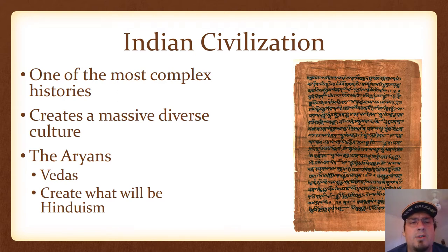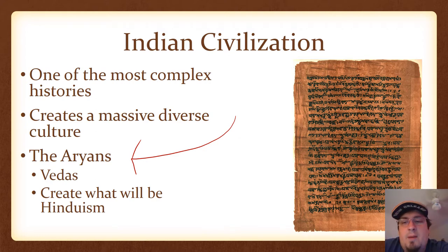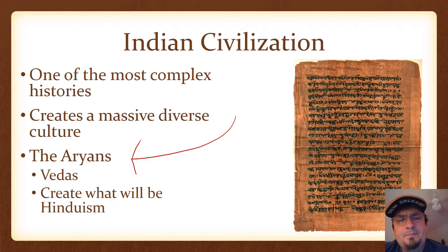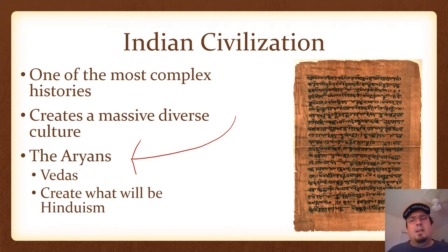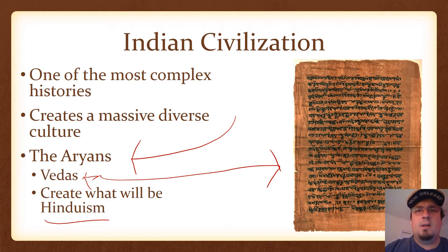Indian culture centers around one group of people in its early aspects: the Aryans — not the Nazi Aryans, not Hitler. These people came from the Caucasus Mountains, nomadic warrior people, and came down and took over northern and central India. The Aryans eventually developed a religious belief that would sort of become Hinduism, though it develops into Hinduism over time. The Vedas — their holy scriptures — set the foundation for a lot of what made Hinduism what it was.